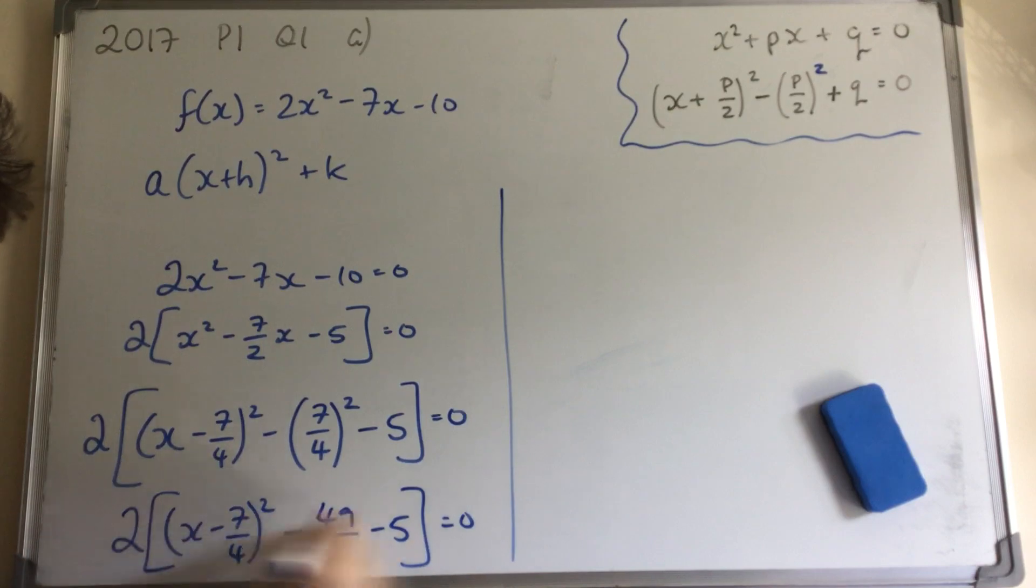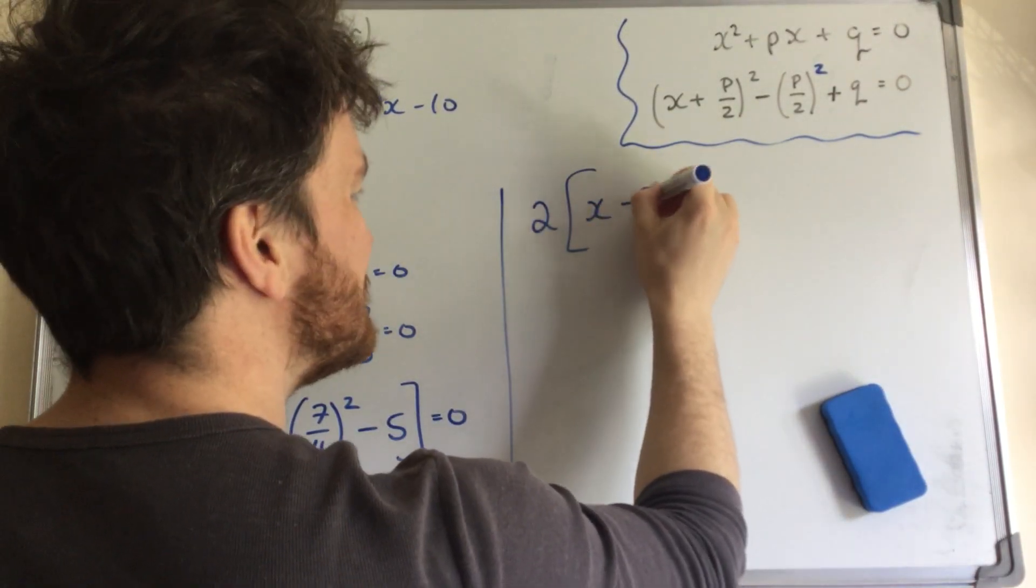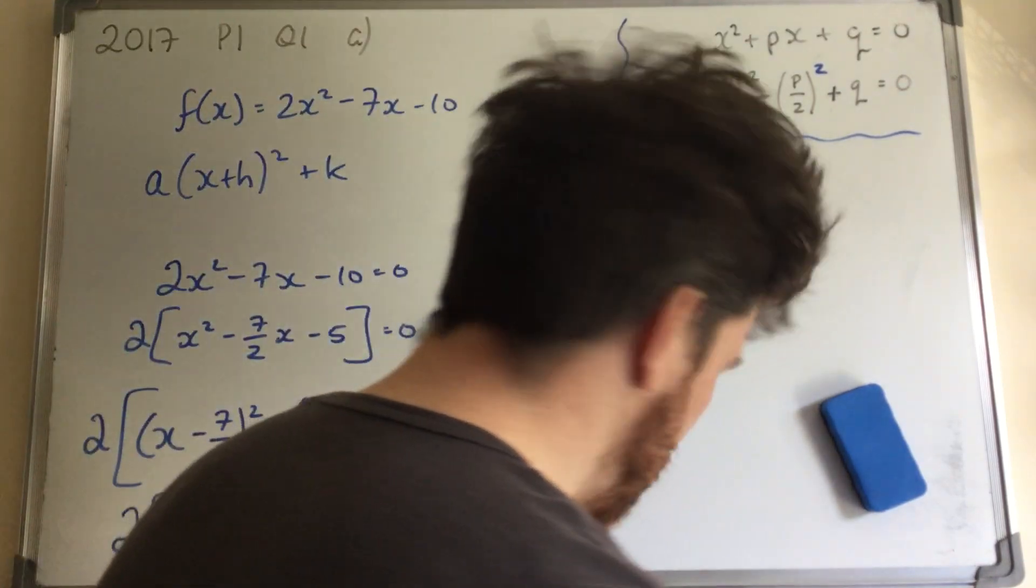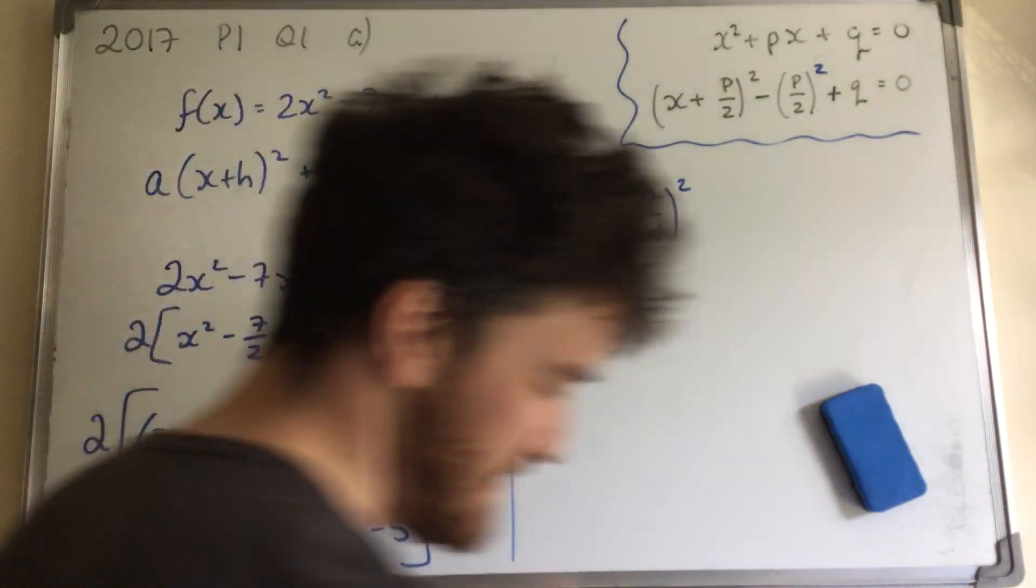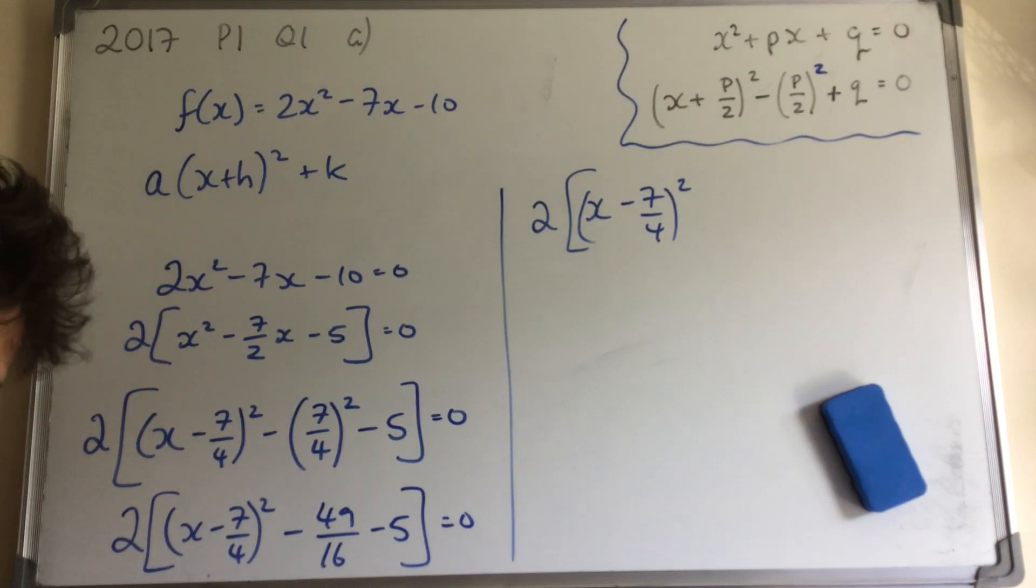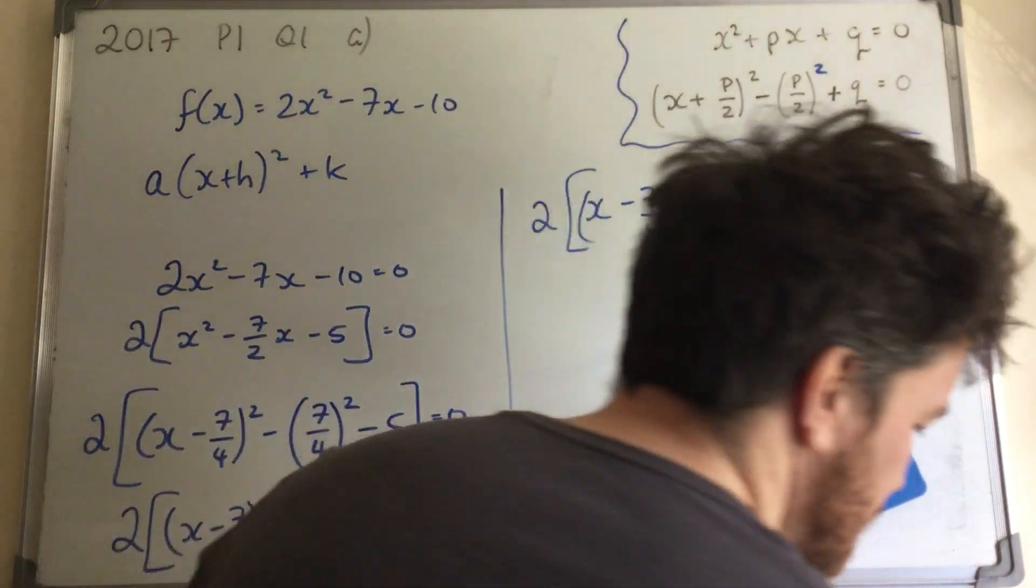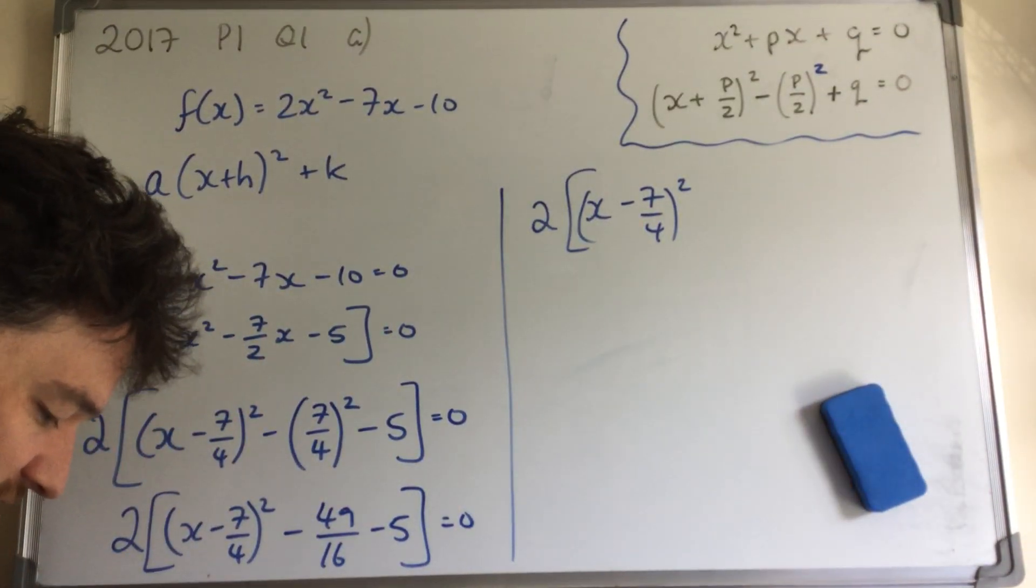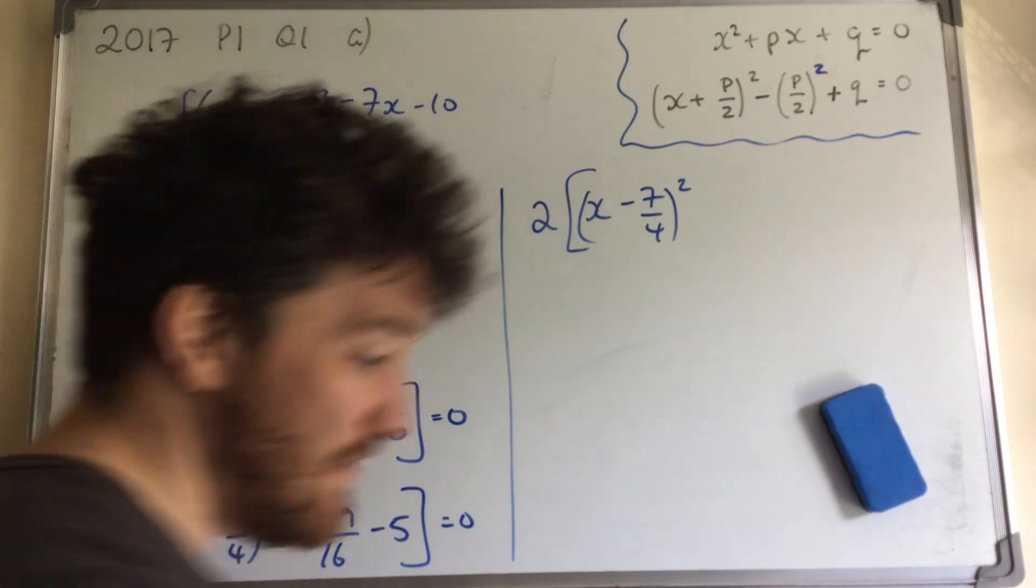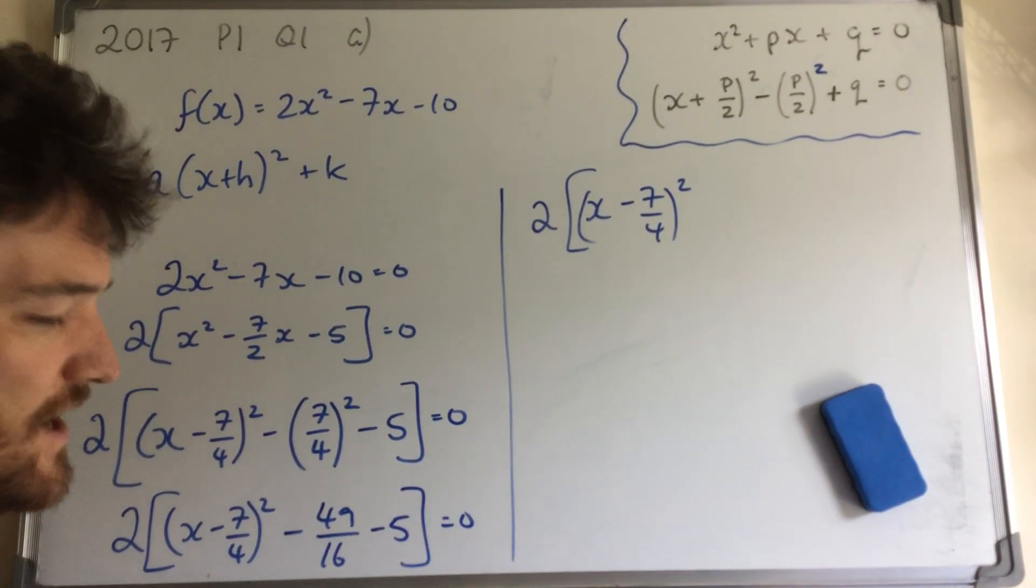Okay, lastly, we're going to multiply. Well, actually, we'll clear up this first. So we say 2 bracket x minus 7 over 4 squared. And then this guy minus 49 over 16 minus 5 is going to become minus 129 over 16. But we'll just double check because I'm not making this mistake again. 49 over 16 minus 5. No, it's not. It's minus 31 over 16. Where did you get 129? Being silly, that's fair.